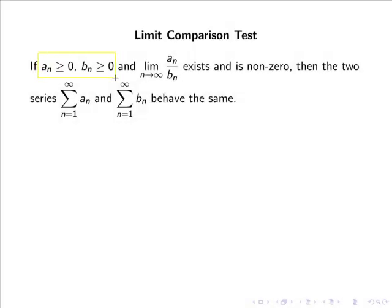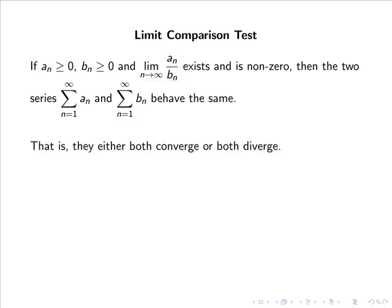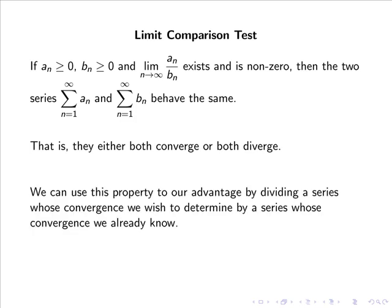If the sequences an and bn are nonzero and the limit as n goes to infinity of an over bn exists and is nonzero, then the two series from 1 to infinity of an and 1 to infinity of bn behave the same — that is, they either both converge or both diverge. We can use this property to our advantage by dividing a series whose convergence we wish to determine by a series whose convergence we already know.